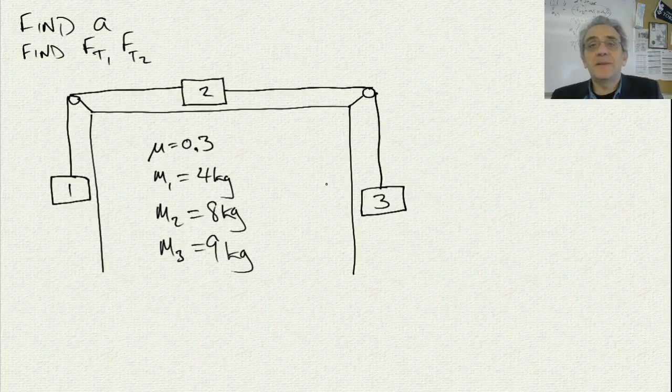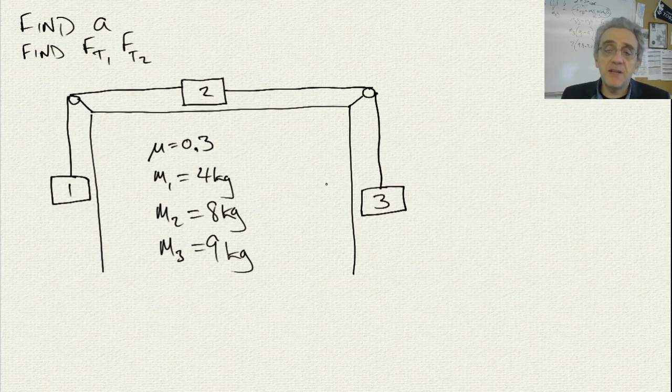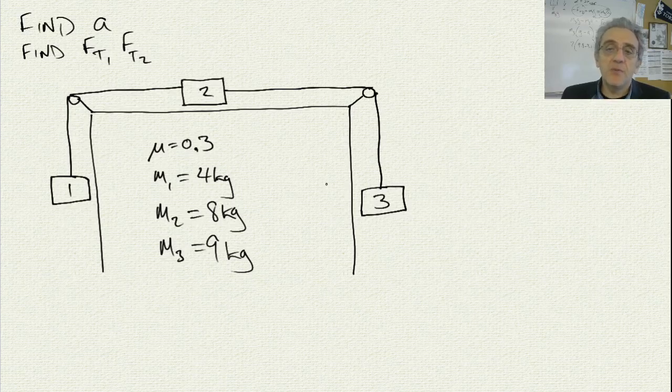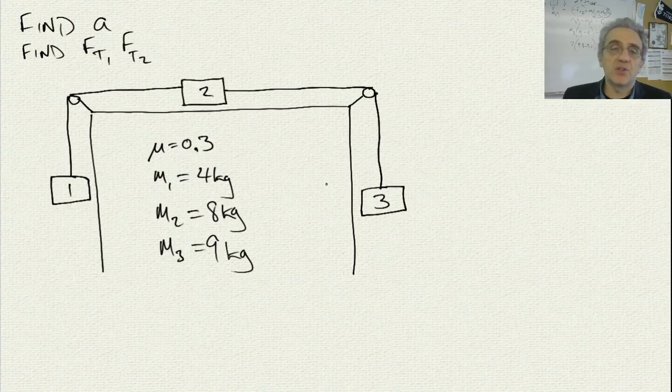Okay, hello everybody. We're back today. We're doing a problem that's in front of you. It's a three-mass system. One of the three masses is on top of the table, but the other two are hanging on either side of the table, connected to the center mass, number two, with ropes, and there's a pulley on either side. Our objective here today is to find the acceleration of this system and also the tension in each rope.